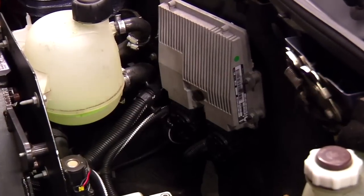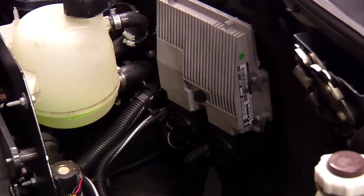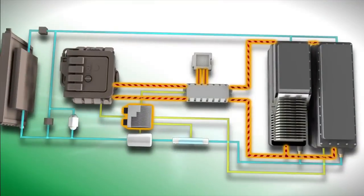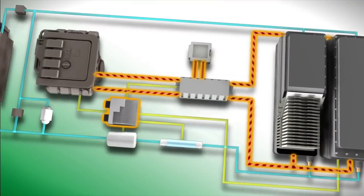PRNDL and accelerator pedal information is then sent to the battery management system via the vehicle's controller area network. Voltage is allowed to the drive motor and the vehicle accelerates.